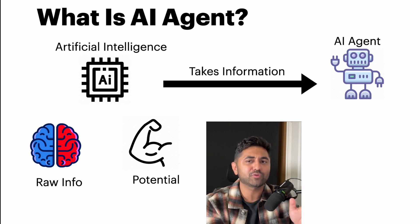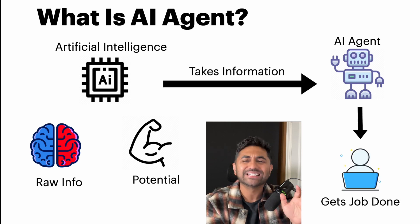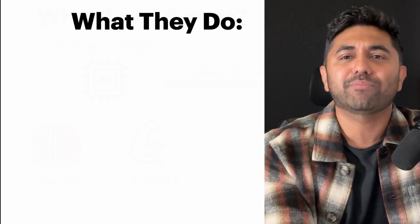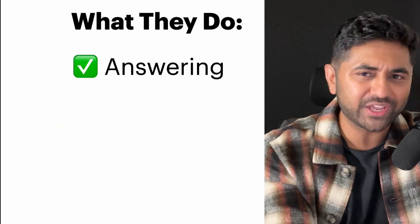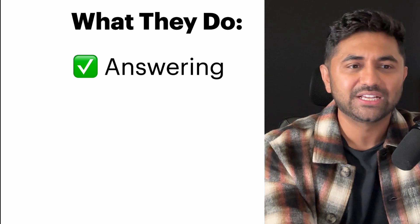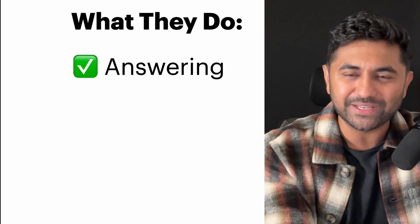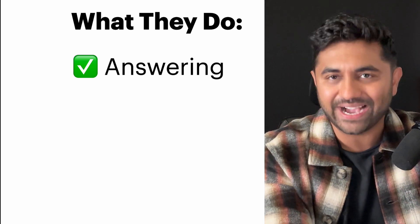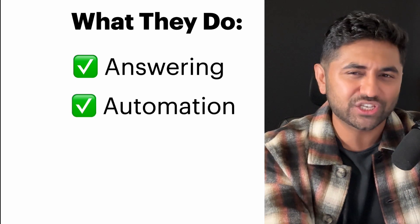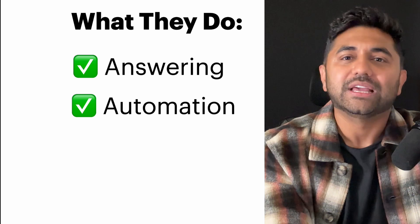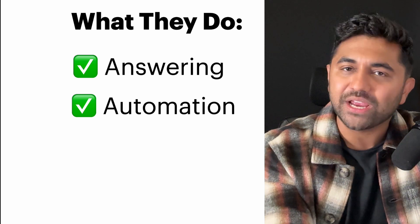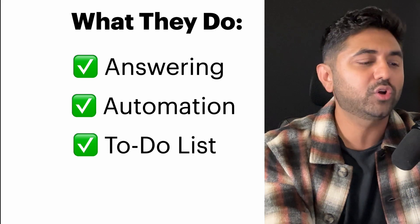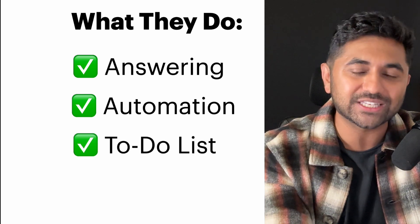This is where things get interesting — an AI agent takes that information and actually gets the job done. For example, when you get on ChatGPT and ask a question, it answers you. In some form, it is an AI agent. It gives you information and logic. It could also be an automation, or it could be doing your to-do list.